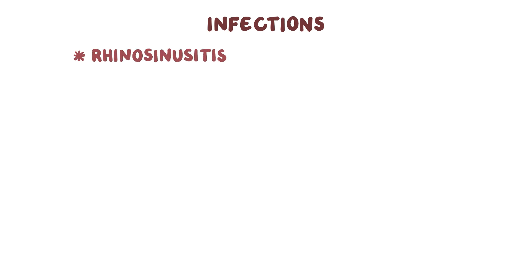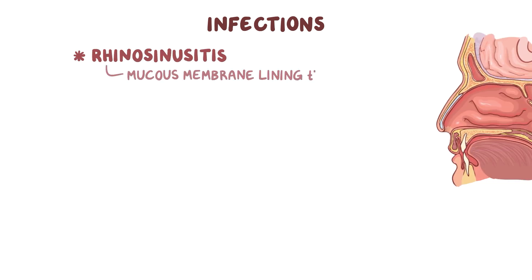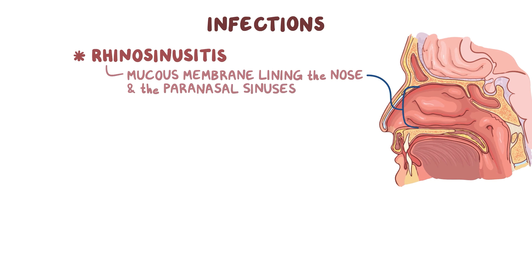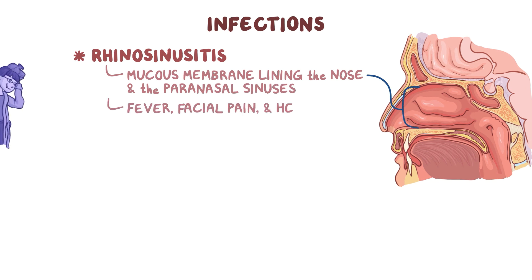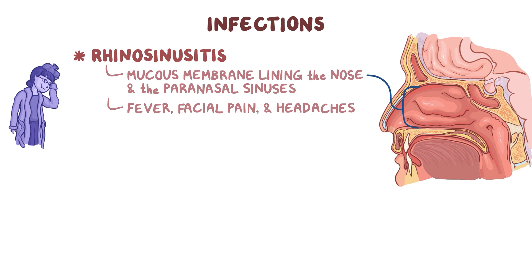One example is rhinosinusitis, which is when the mucous membrane lining the nose and the paranasal sinuses gets inflamed, resulting in fever, facial pain, and headaches. Sometimes, when the walls of the paranasal sinuses are very thin, strep pneumoniae can get into the cranial cavity, resulting in meningitis.